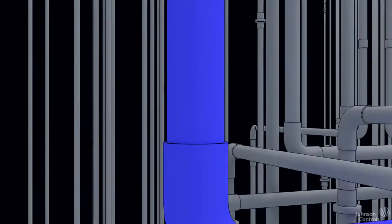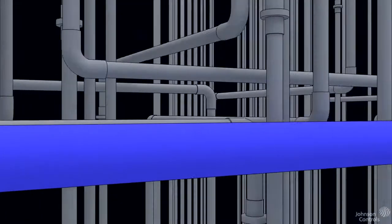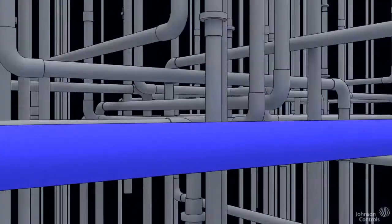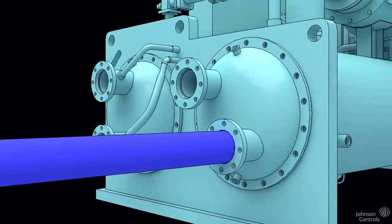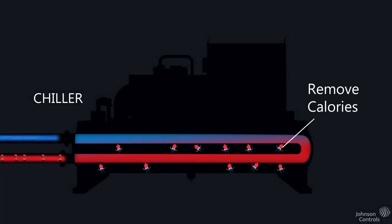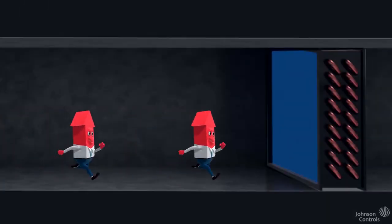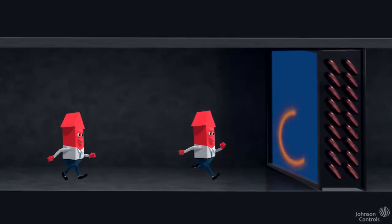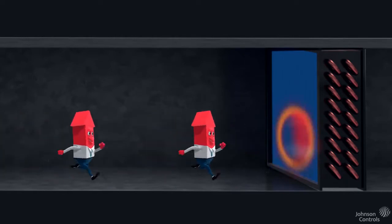Mr. Calorie and company, however, are now rafting along in the chilled water, traveling inside piping to a large piece of equipment called a chiller. This specialized machine is designed to remove calories from the chilled water, which then cycles back to the air handler to pick up more of Mr. Calorie's pals.